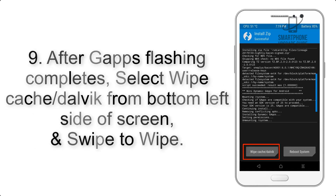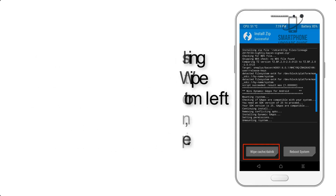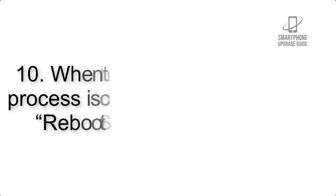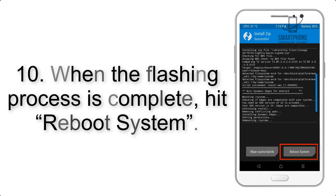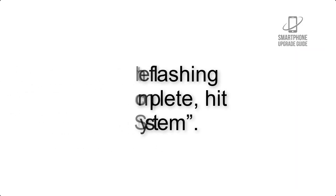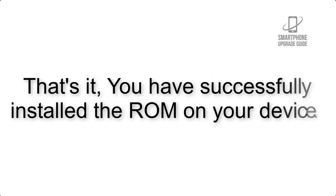Step 9: After GApps flashing completes, select Wipe Cache and Dalvik from the bottom left side of the screen and swipe to wipe. Step 10: When the flashing process is complete, hit Reboot System. That's it — you have successfully installed the ROM on your device.